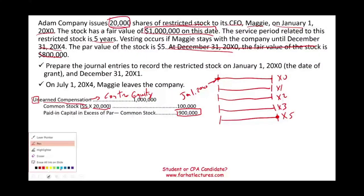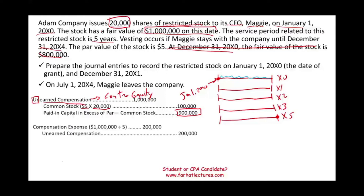Here's what's going to happen. A year later, once the year has ended, we are ready to start recording our compensation expense. Maggie stayed for a year, so now we can record the expense. We're going to take the million divided by five, because it's over a five-year period, and record an expense of $200,000. We debit compensation expense and reduce unearned compensation by $200,000.